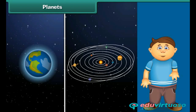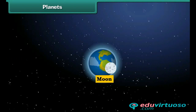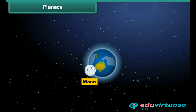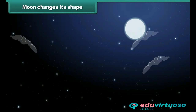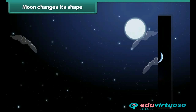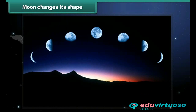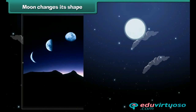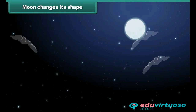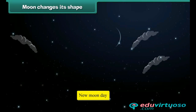The Moon is the only natural satellite of planet Earth. It revolves around the Earth in its own orbit. At night we can also see the moon in the sky — most of you know it as Chanda Mama. You'll be surprised to know that the shape of the moon appears to change every day. Sometimes the moon appears perfectly round; this day is called a full moon day. Sometimes we cannot see the moon in the sky at all; this day is known as new moon day.